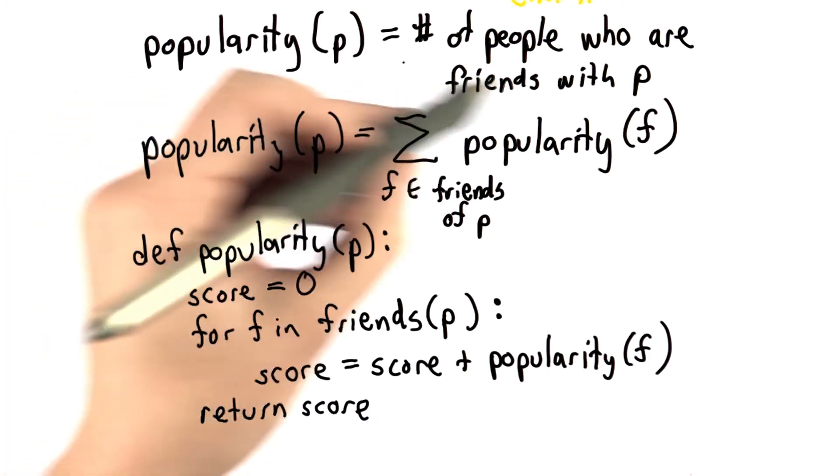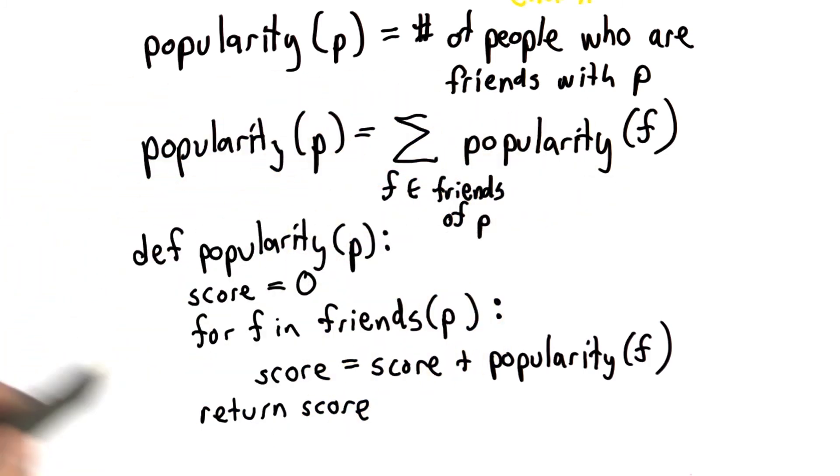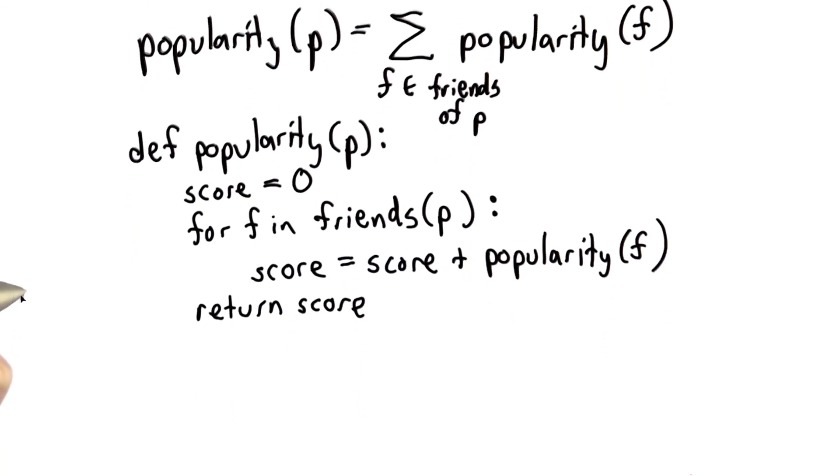So now you've seen a mathematical definition of popularity. You've seen the same thing as code. I'm going to ask you a very important quiz question next. It's an easy one to get right if you try twice because there's only two answers. But think about it carefully. See if you can get it right the first time.